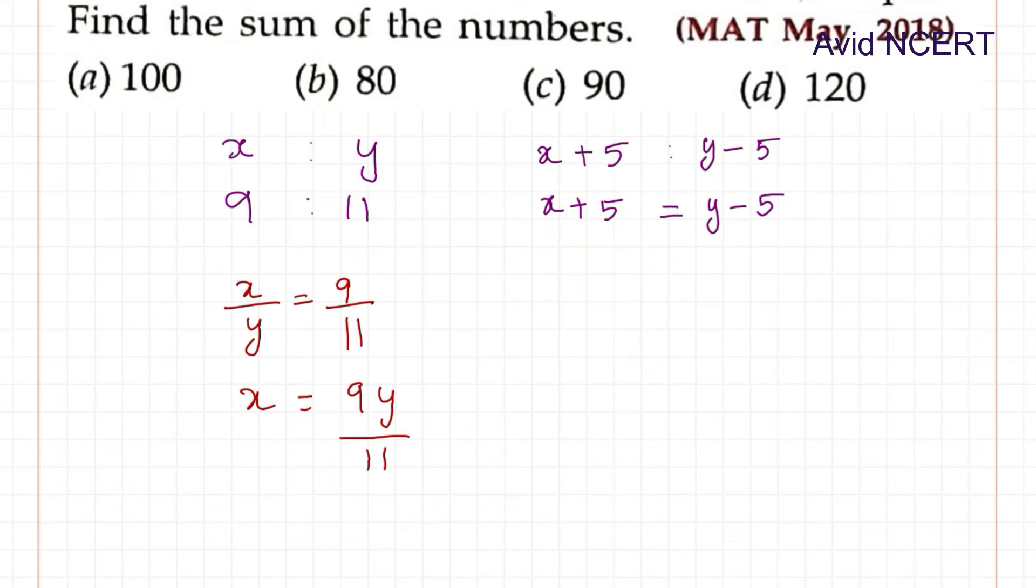First let me rearrange this equation which is x minus y - y goes this side becomes minus y, and minus 5 come to this side becomes plus 5 equals 0.